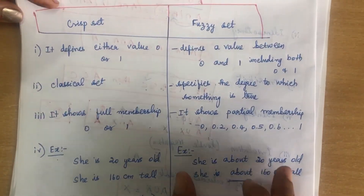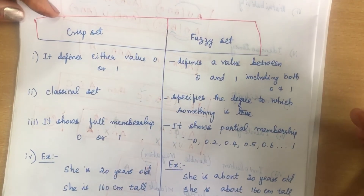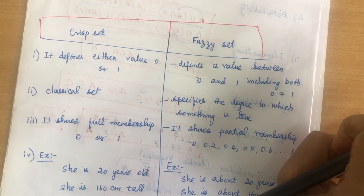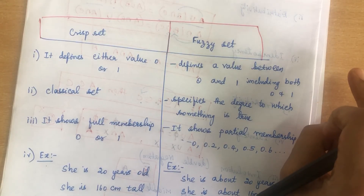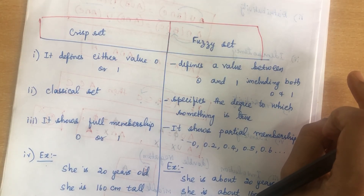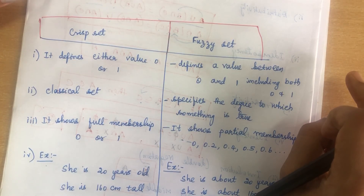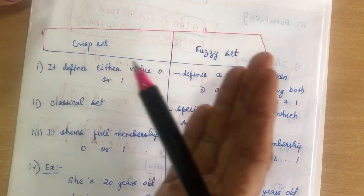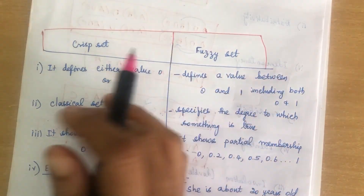In this video, I have clearly explained sets and the types of sets. Next, I explained crisp set or classical set — its properties and operations. And lastly, I explained the difference between crisp set and fuzzy set.